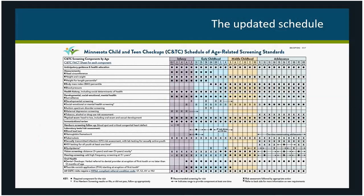A bullet point or dot indicates a required screening or preventive service for that visit. An R indicates a screening that is strongly recommended but not required. Arrows indicate a range in which a particular screening can be done. A set of arrows from one age to another indicates that the screening should be provided at least once in that age range — for example, a screening hemoglobin test at least once for menstruating females. In general, screening earlier in that time range is probably preferred in case the patient misses future visits. However, in some cases it might be better to wait — for example, if an adolescent female just began menstruating one or two months ago, it might be better to wait until their next visit to do the screening hemoglobin for anemia.